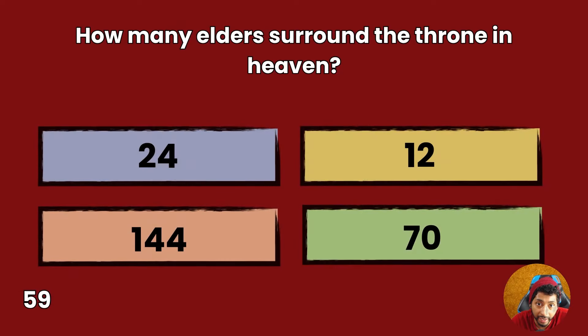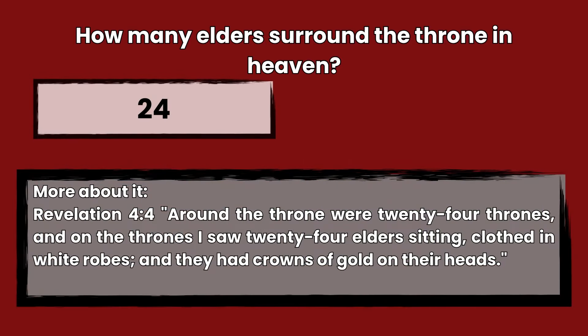Question 59: How many elders surround the throne in heaven? 24, 12, 144, or 70? Answer: 24. Revelation 4:4 — Around the throne were 24 thrones, and on the thrones I saw 24 elders sitting, clothed in white robes, and they had crowns of gold on their heads.